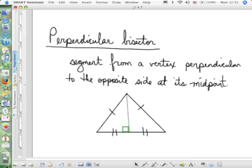So a perpendicular bisector is an altitude and a median all in one. Because it's doing both jobs. It's cutting the opposite side in half and it's perpendicular, forming right angles.